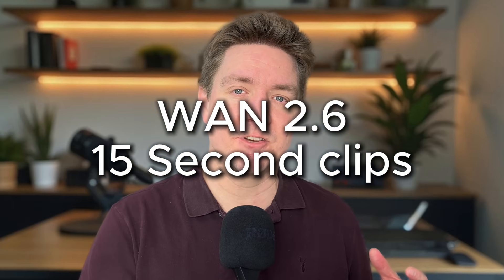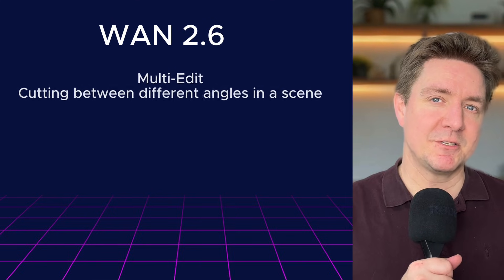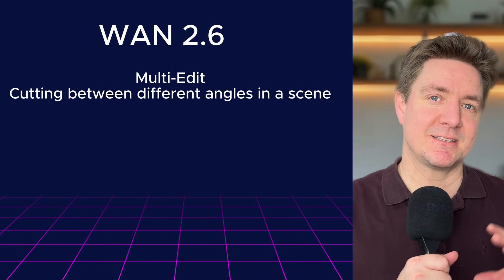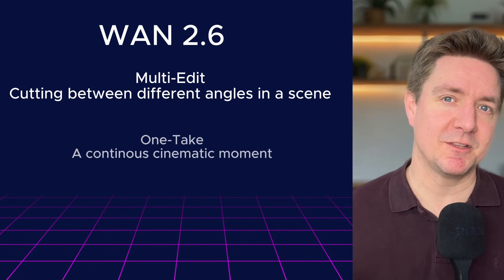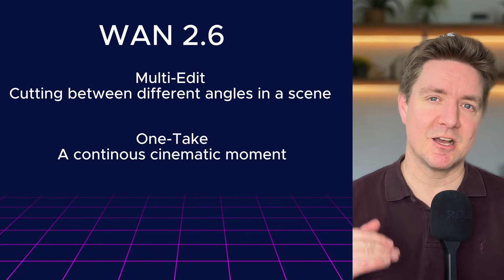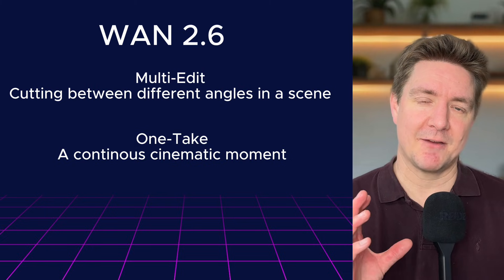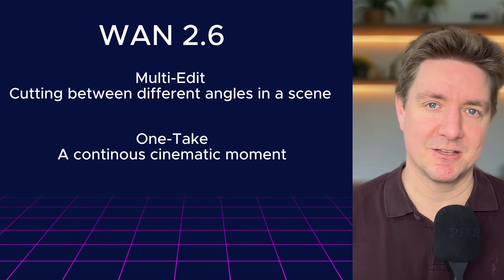WAN 2.6 can generate up to 15-second clips in a single prompt and it can do it in two different ways. One: a multi-edit, cutting between different angles in the same scene like a mini-edit. Two: a one-take, a continuous cinematic moment where you can drive the dialogue and story forward, keeping your camera trained on that actor throughout that scene.